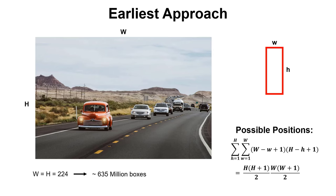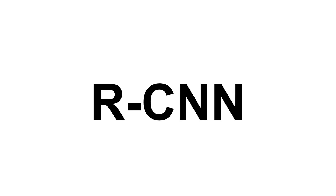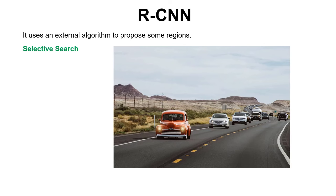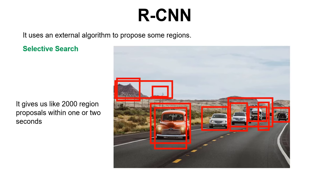For example, if the input image is 224 by 224, then we have to examine around 635 million boxes, which is not computationally feasible. So now we shall begin our R-CNN. The first idea is that instead of exploring every possible bounding box, we can use an external algorithm to propose us some regions. The algorithm R-CNN uses is called selective search.